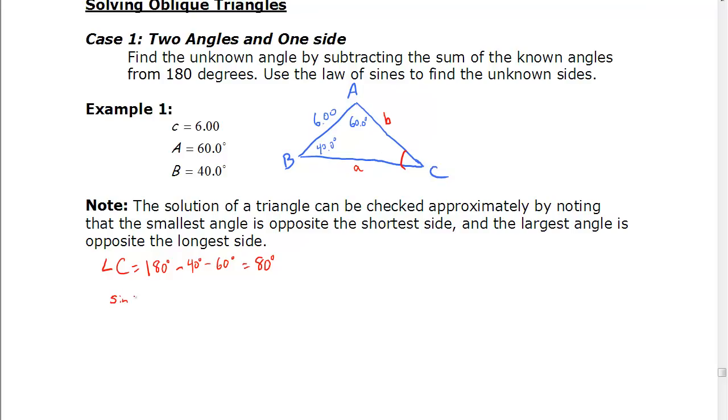The sine of angle C, or just sine of C over C, is equal to the sine of B over B, and that will let us find side B. So if we rearrange that equation for B by cross-multiplying and then dividing, we end up with C times the sine of B over the sine of C equals B. And if we put in the values then, that's going to be 6.00 times the sine of 40.0 degrees divided by the sine of 80 degrees. Put it on your calculator, you get 3.92 for side B.